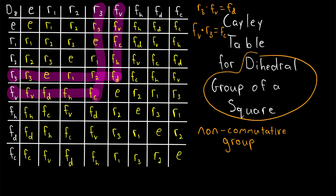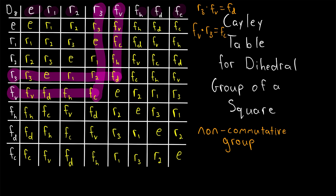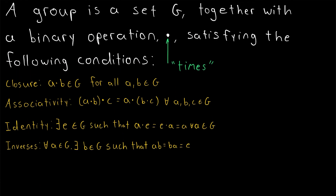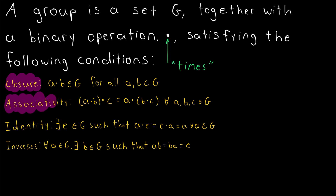This dihedral group of a square is called D8, because a square has 8 symmetries. Similarly, the dihedral group of a triangle is called D6, because the triangle has 6 symmetries. In future lessons, we'll talk more about special types of groups and different relations that groups can have with each other. Remember that a group is a set G together with a binary operation — often represented with a dot or a star — satisfying the group axioms: the set must be closed under the operation, it must be associative, it must have an identity element, and every element must have an inverse.